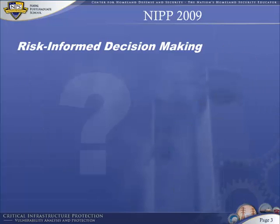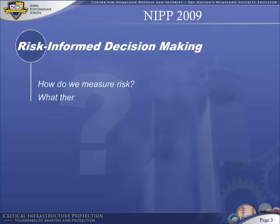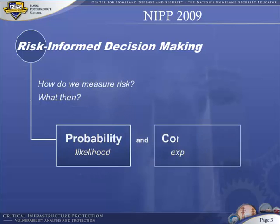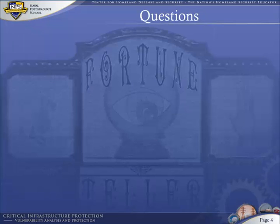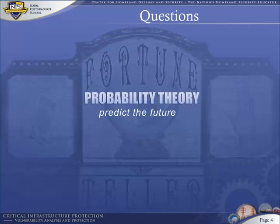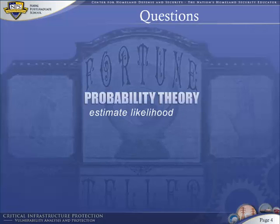But what does risk-informed decision-making actually mean? How do we measure risk? What do we do with it after we measure it? To understand risk, we must first understand probability and consequence. The purpose of probability theory is to predict the future. Of course, nobody can predict the future — we can only estimate the likelihood of events occurring. Using probability theory and a handful of other theories, we can get a handle on probability and eventually risk.